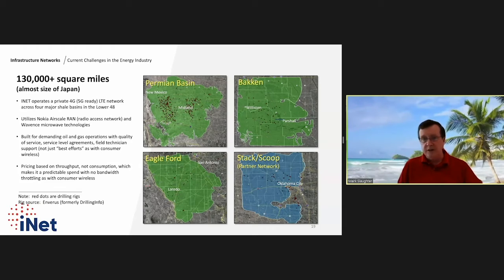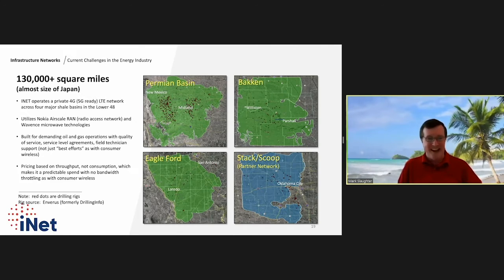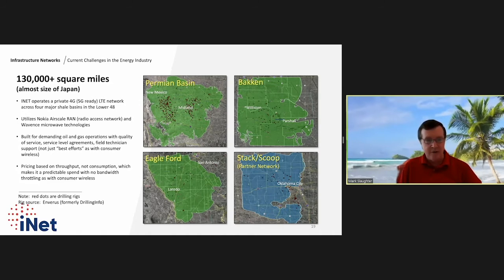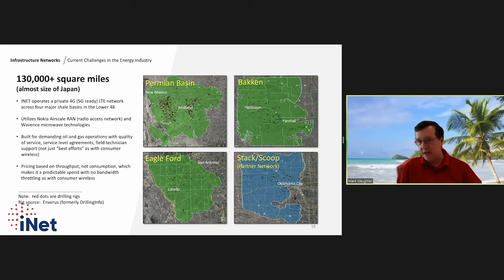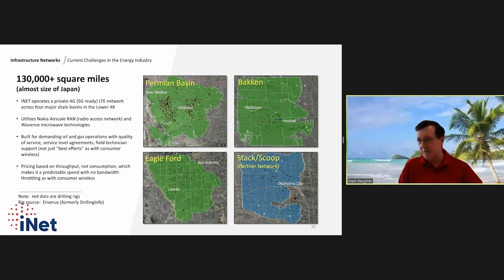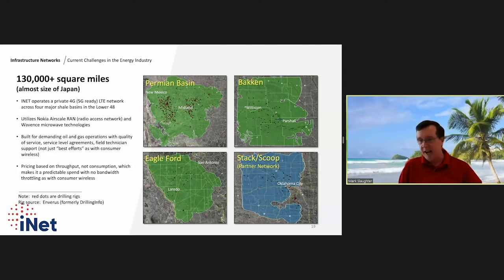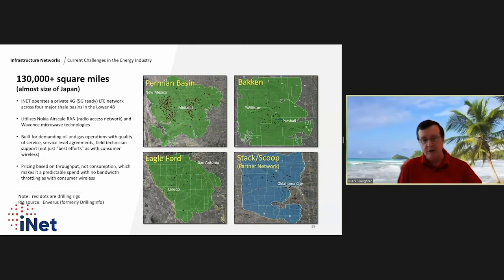Our network is built on a Nokia AirScale platform with Ericsson microwave for backhaul along with fiber — not Huawei — built specifically for demanding oil and gas operations. We deliver quality of service, prioritizing different levels of traffic to provide VIP priority to mission-critical and real-time data, making the overall network perform better compared to consumer public carrier networks. Our pricing is based on throughput, not consumption — you can put as much or as little data as you want through the pipe; we define the pipe for you.